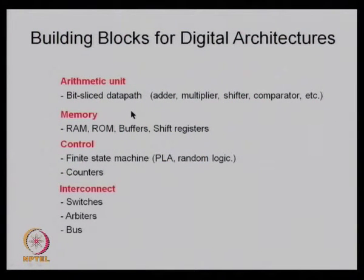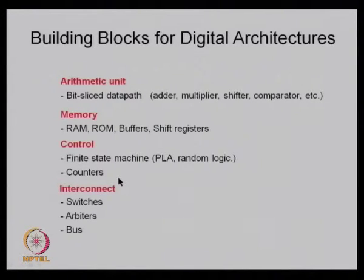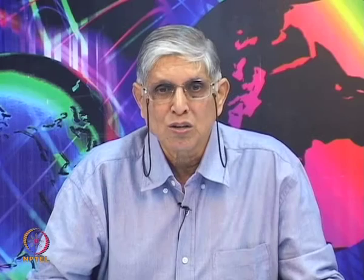A typical digital architecture has building blocks including an arithmetic unit, which may be a bit-slice data path with adder, multiplier, shifter, comparators, and so on. Then there are memory elements like RAM, ROM, buffers, and shift registers. The control is some kind of logic — it may be random logic or PLA-based, implementing a finite state machine. You may also have counters in the control block, and there are switches, arbiters, and buses, which actually constitute a larger part of a whole digital architecture.